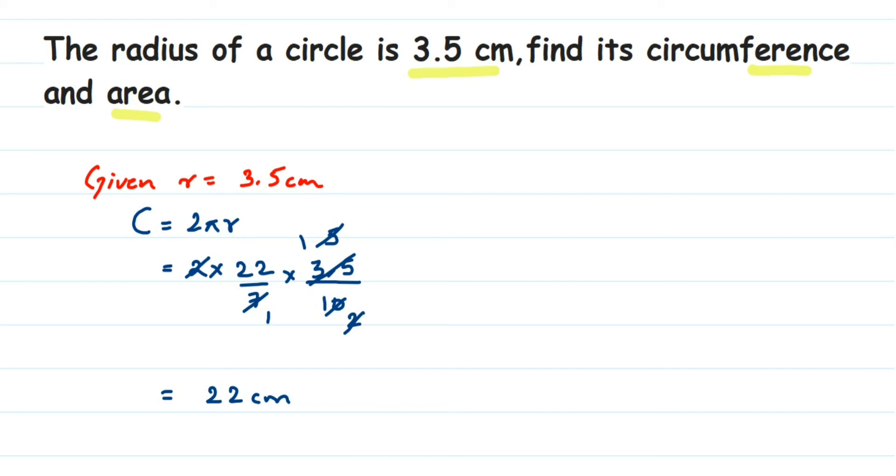Next we're going to find out the area of the circle. So area, we know the area formula is πr². So pi value I'm going to take it as 22/7 and r value will be 3.5, so multiplied by 3.5 multiplied by 3.5. r² means multiplying r two times.